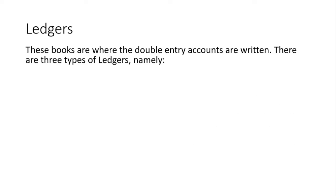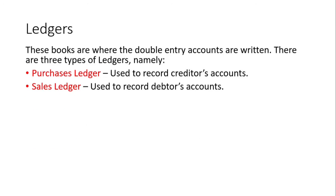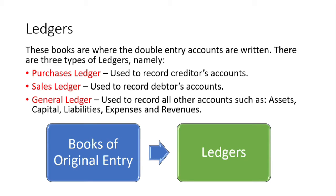So then, ledgers — what are ledgers? Ledgers are the books where the double entry accounts are written. There are three types of ledgers: namely the purchases ledger, which is used to record creditors' accounts; the sales ledger, which is used to record debtors' accounts; and the general ledger, which is used to record all other accounting information such as assets, capital, liabilities, expenses, and revenues. The ledger is directly linked to the books of original entry, and so we move from the books of original entry and then make corresponding entries in the ledgers. This is a very important concept to grasp.